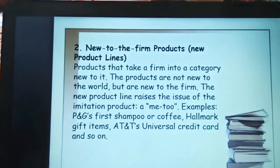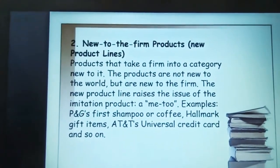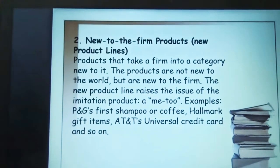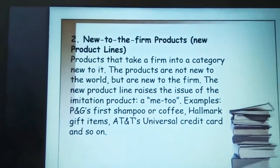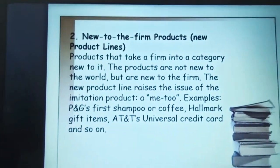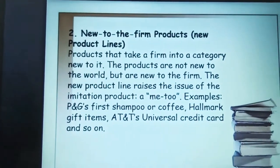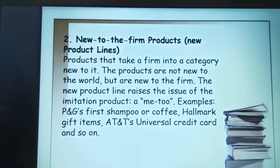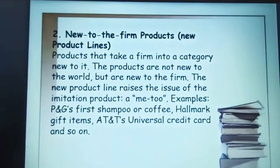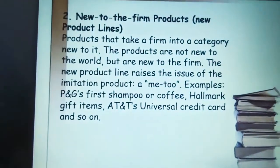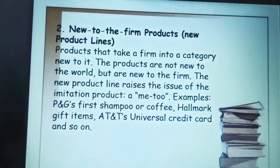Take the example of Hindustan Unilever — they have different types of products, and if they innovate something in one particular product, they accomplish themselves in a different segment of the market. This is known as a new-to-the-firm product and new product line.